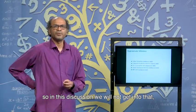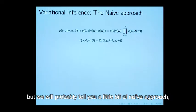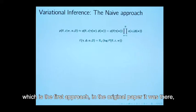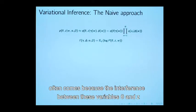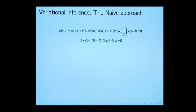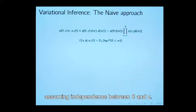In this discussion we will not get into that, but we will probably tell you a little bit of naive approach which is the first approach which David in the original paper had there. What they proposed was the following. He said that the intractability often comes because of the interference between this variable theta and z. He said that one way to do that is to approximate this distribution by assuming independence between theta and z.